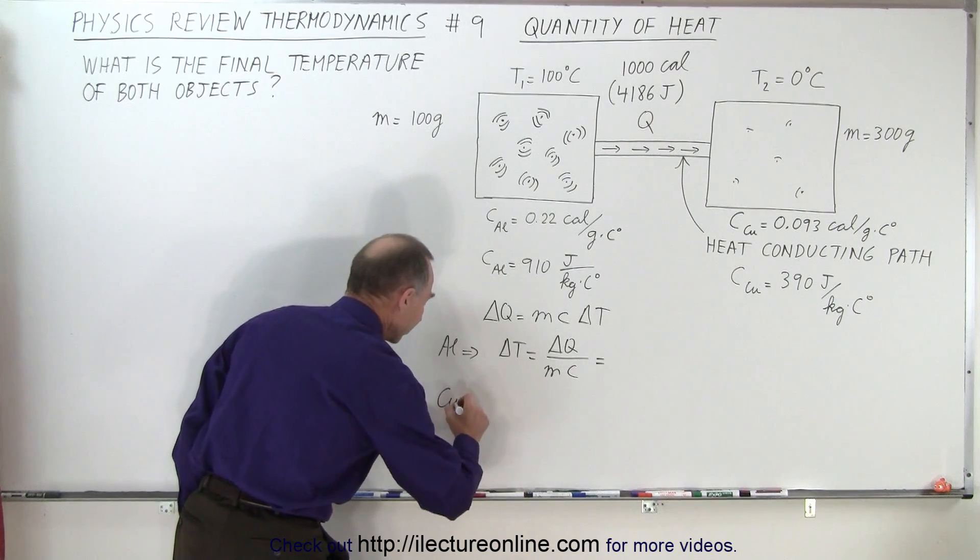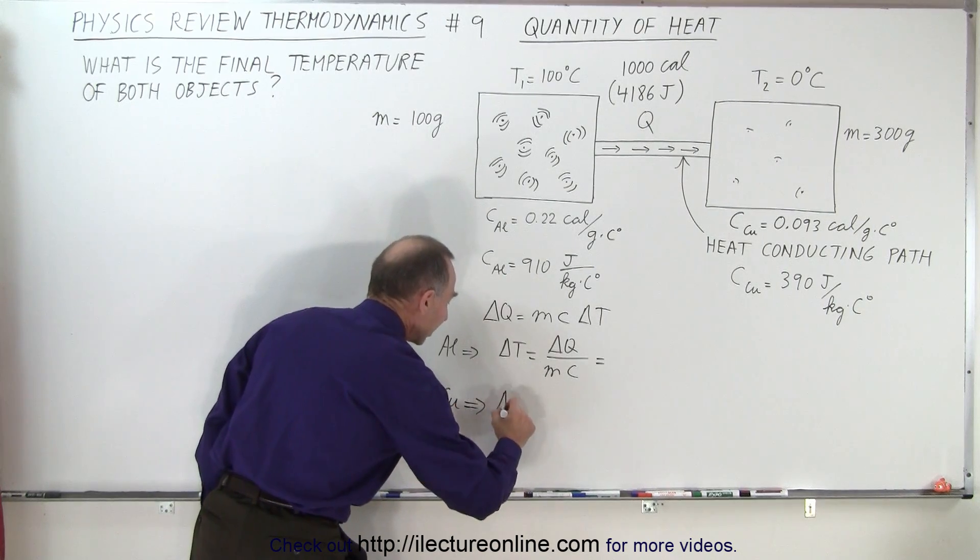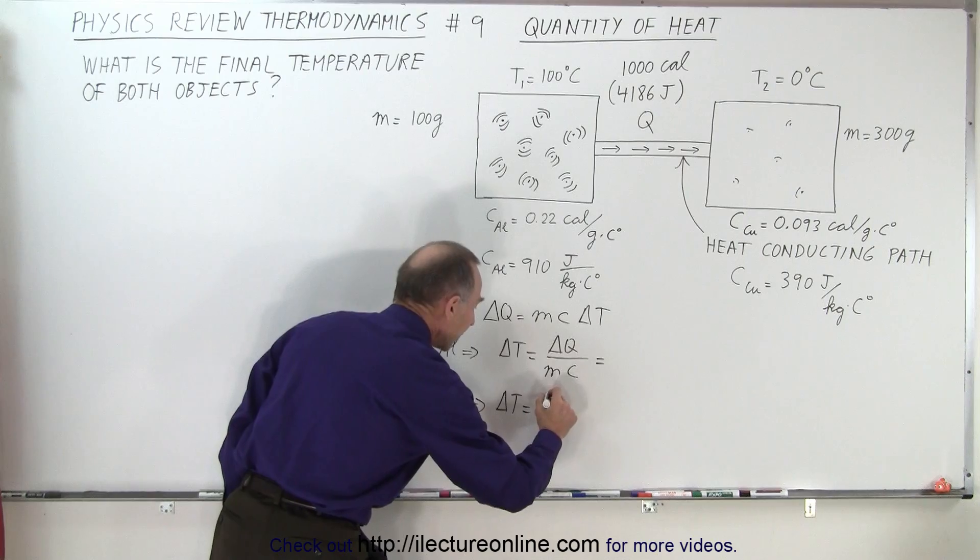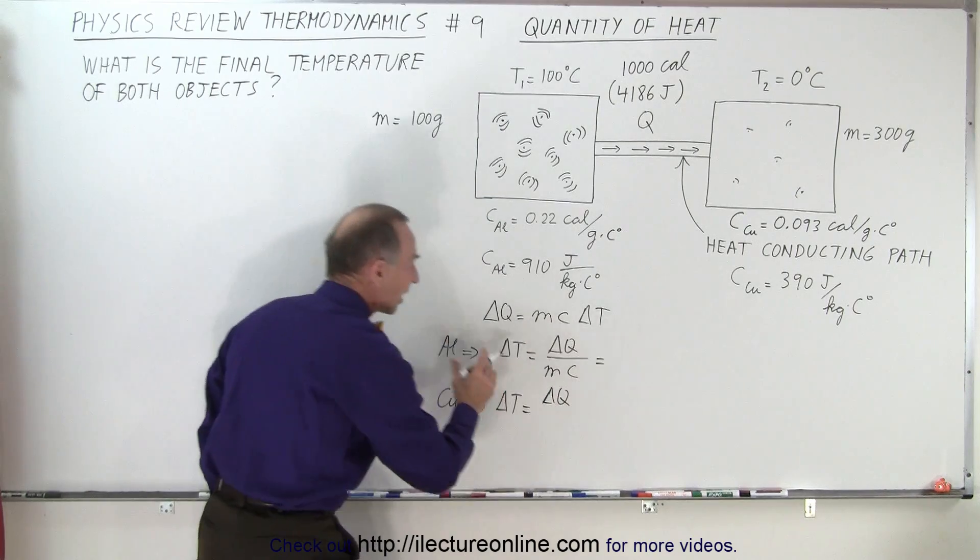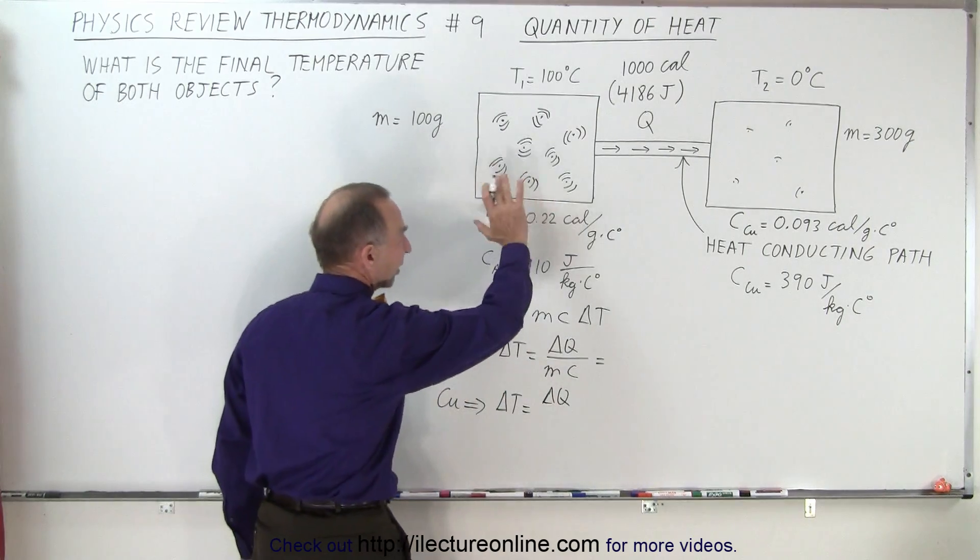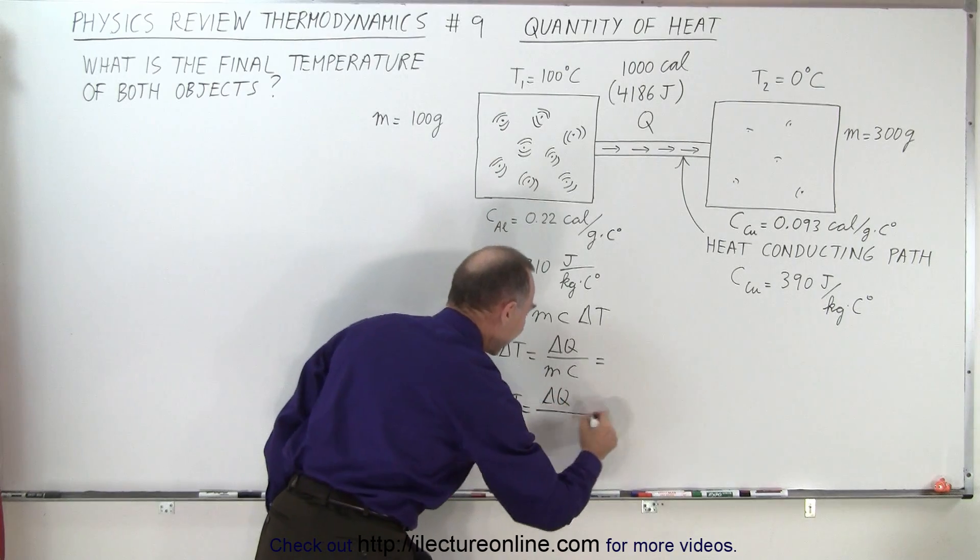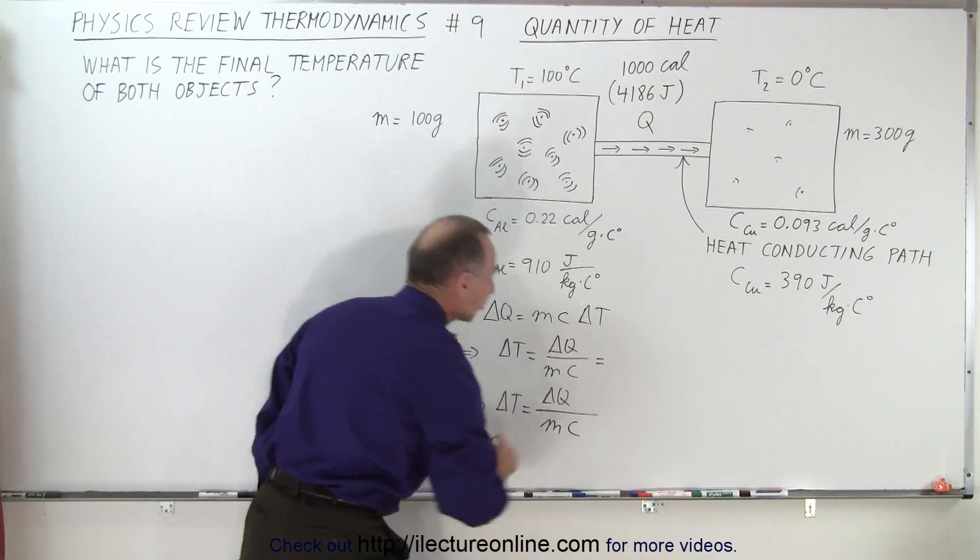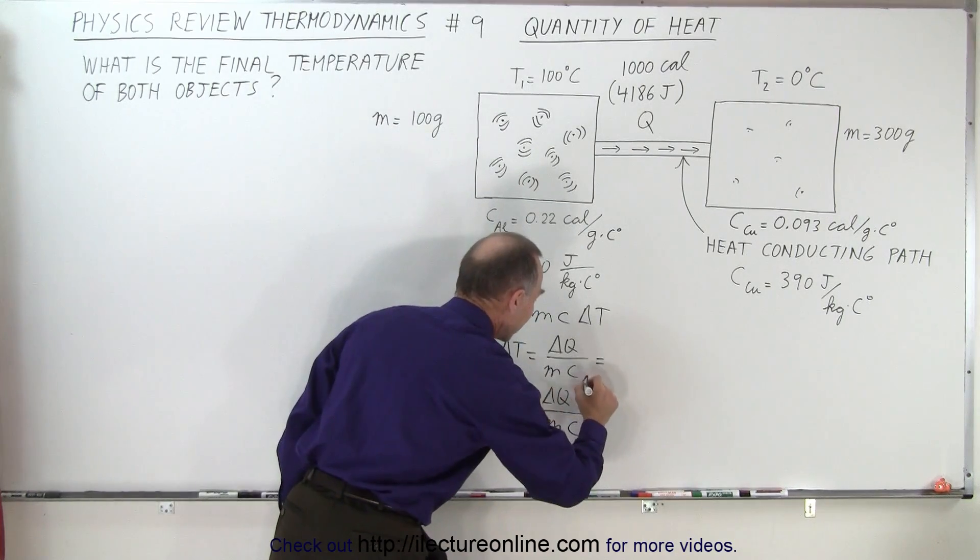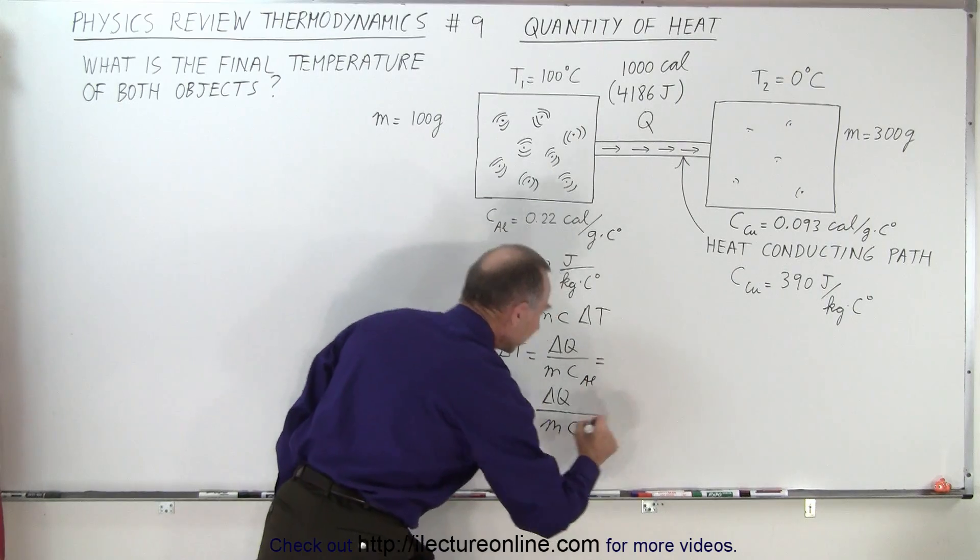Of course we need to do the same for the one on the right. The change in temperature is going to be equal to the amount of heat transferred, which is of course the same—whatever heat we take out of the left side is added to the right side—divided by its mass, times its specific heat. So this is the specific heat of aluminum, this is the specific heat of copper.